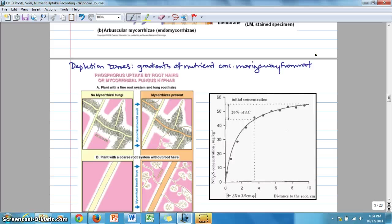Now the width of these depletion zones varies. Let's say the diameter of the depletion zone or the width varies according to nutrient solubility. So we see, but it also varies depending on whether root hairs are present or mycorrhizae are present or not.